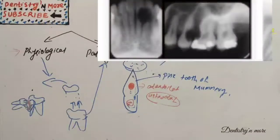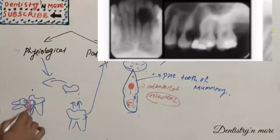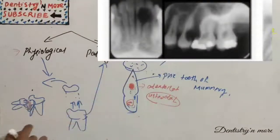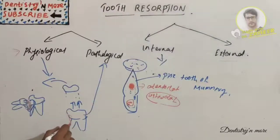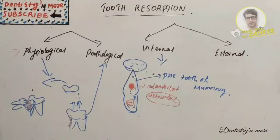Radiographically in external resorption, the apex appears softened, flattened, or square-shaped. The foramen at the apex and opening can be seen. Margins of the lesion are ragged and irregular — unlike internal resorption, which has clearly defined borders. There is variation in density due to varying rates of resorption and repair. External root resorption is associated with an infected pulp, so there will be a negative response to pulp sensitivity tests.